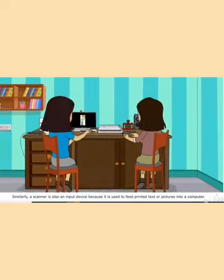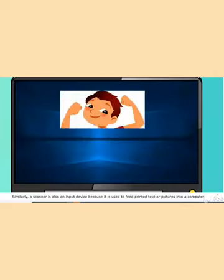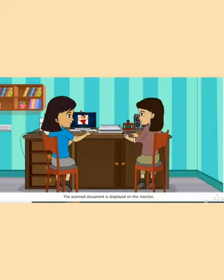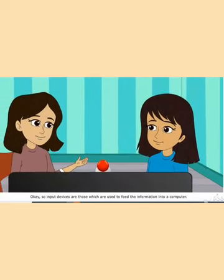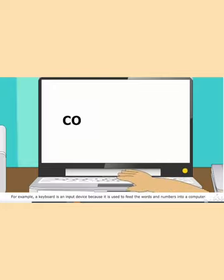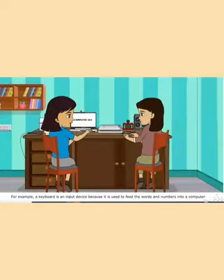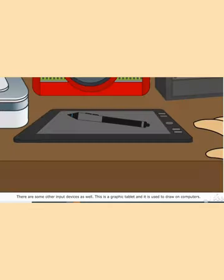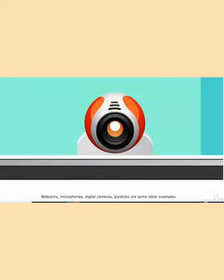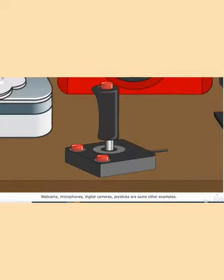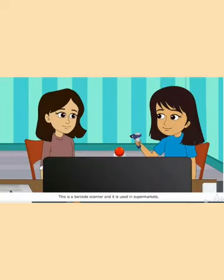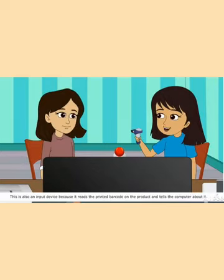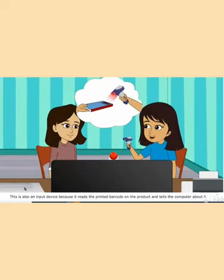A scanner is an input device because it is used to feed printed text or pictures into a computer, and the scanned document is displayed on the monitor. A keyboard is an input device because it is used to feed words and numbers into a computer. Other input devices include a graphic tablet used to draw on computers, webcams, microphones, digital cameras, and joysticks. A barcode scanner is also an input device — it reads the printed barcode on a product and tells the computer about it, and the computer shows the price of the product.